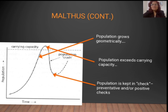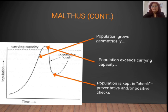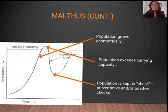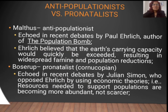There is a graph through which you can understand how population grows. Population is growing geometrically — increasing very rapidly — as the numbers 2, 4, 6, 8, 16, 32, 64, and so on increase continuously. The second point shown by the arrow is that population exceeds carrying capacity. The third point is that population is kept in check by preventive and positive checks, which bring the population down.